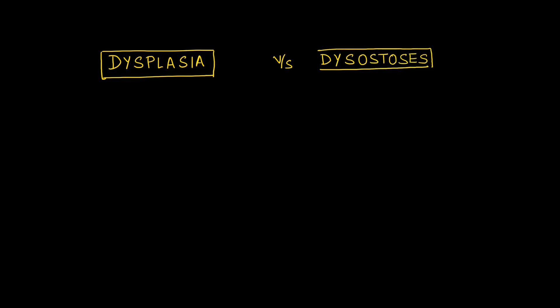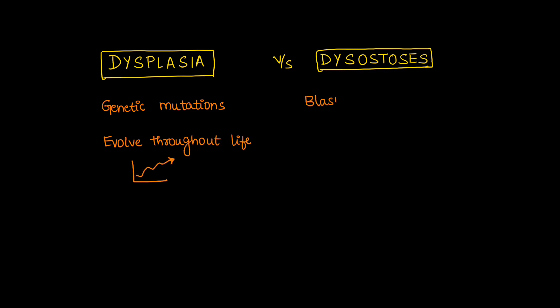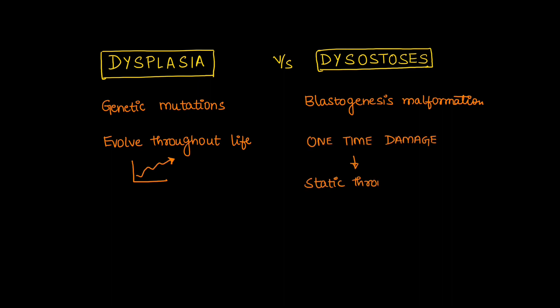Let's see what dysplasia means and how it's different from dysostosis. Dysplasia is due to some genetic mutations and it will evolve throughout life. Dysostosis is a blastogenesis malformation defect, which is a one-time damage happening in utero and it is static throughout life. An example is Klippel-Feil syndrome.